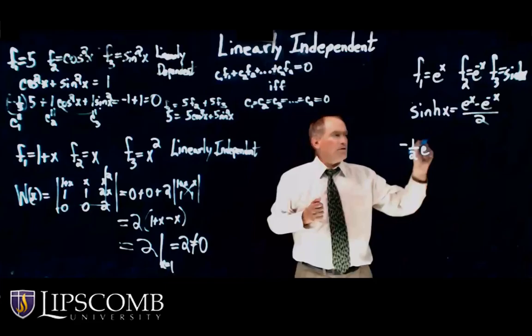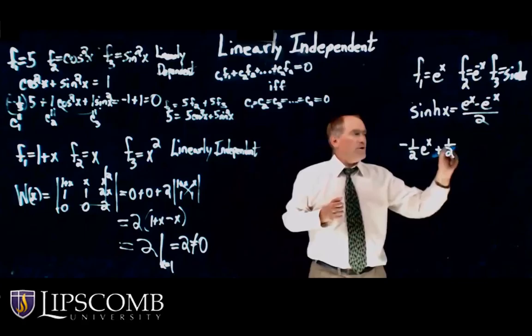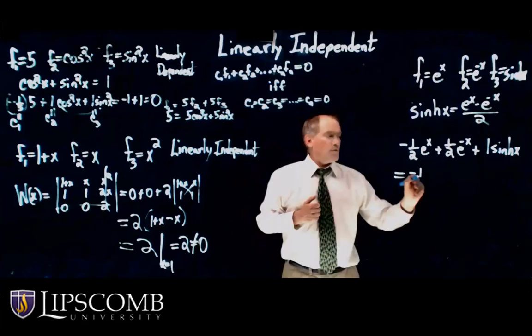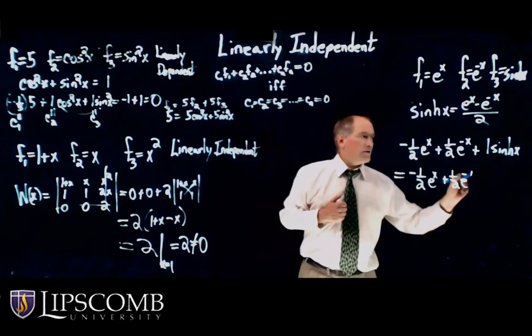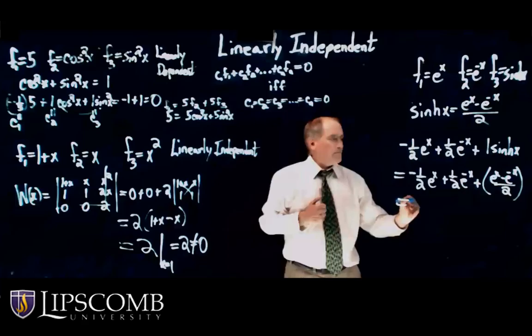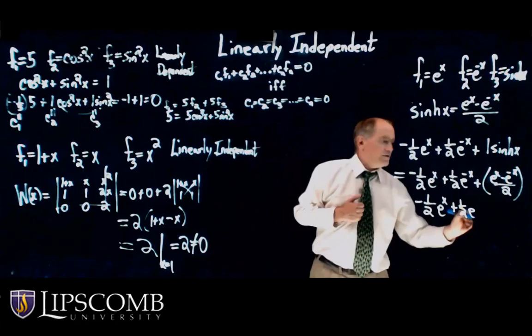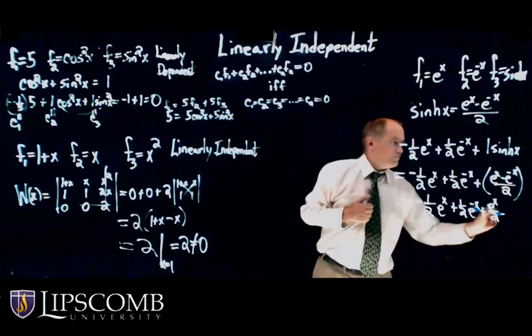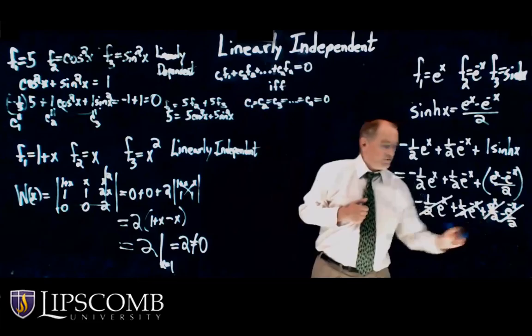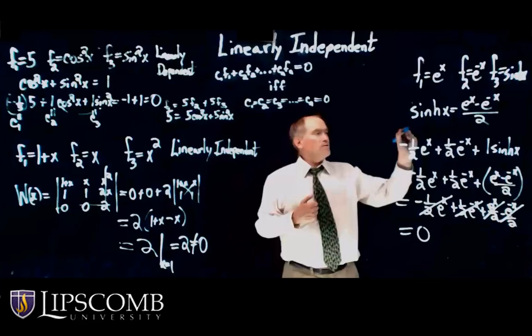How about if I took minus 1 half e to the x, then I'm going to take a plus 1 half e to the minus x, plus 1 sinh of x. Well, let's write the sinh of x by its definition. So this is minus 1 half e to the x, plus 1 half e to the minus x, plus e to the x minus e to the minus x over 2. So that would be minus 1 half e to the x, plus 1 half e to the minus x, plus e to the x over 2, minus e to the minus x over 2. Well, if you notice, this one cancels out with this one. This one cancels out with this one. So I get 0.